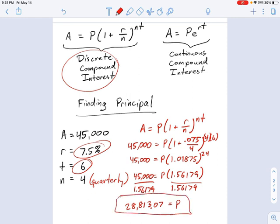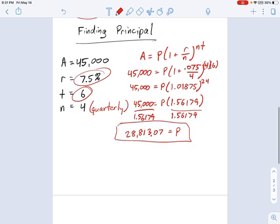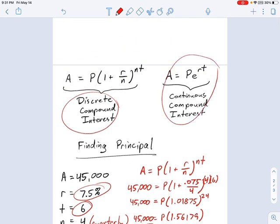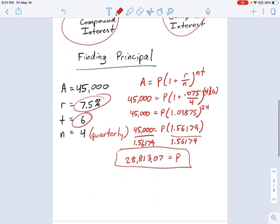So I put in 28 grand, 29 grand, and after about six years, I expect that'll be $45,000, enough to start a nursing program. So that's the idea of using quarterly interest. Let's try it again for compound or continuous compound interest.